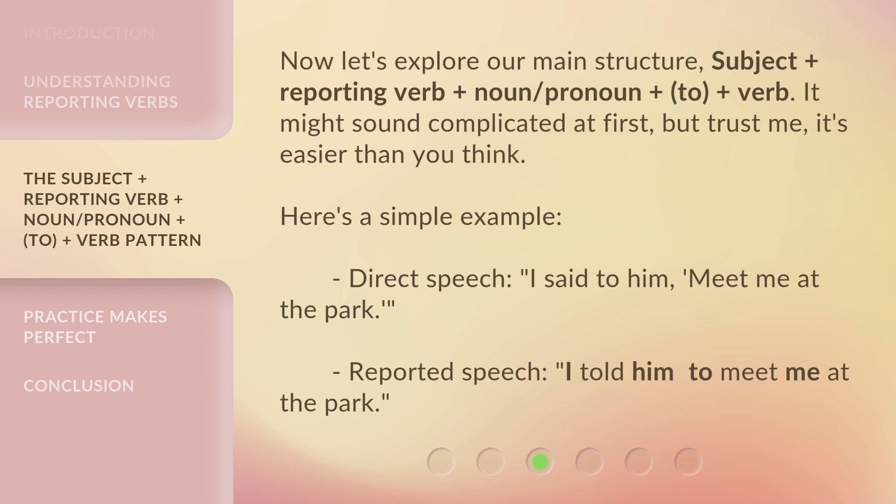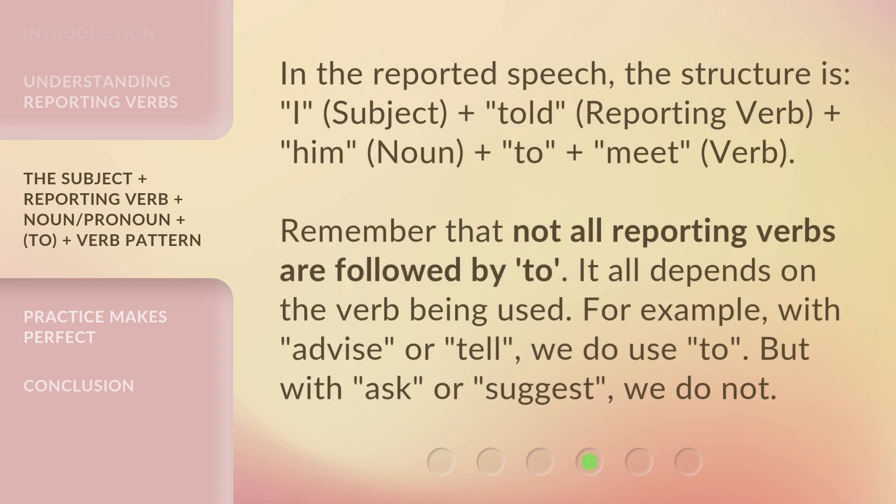Here's a simple example. Direct speech: 'I said to him, meet me at the park.' Reported speech: 'I told him to meet me at the park.' In the reported speech, the structure is: I (subject) plus told (reporting verb) plus him (noun) plus 'to' plus meet (verb).